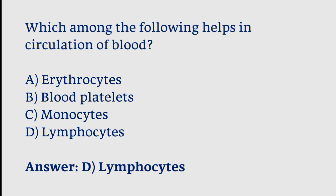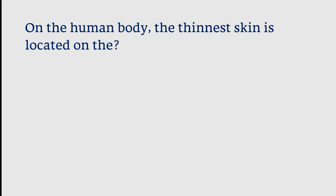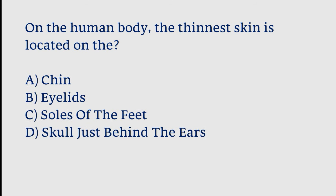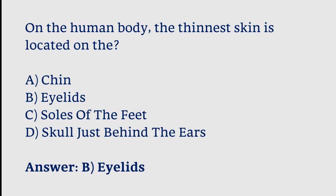On the human body, the thinnest skin is located on: the chin, eyelids, soles of the feet, or skull just behind the ears. The correct answer is option B. The thinnest skin on the human body is located on the eyelids.